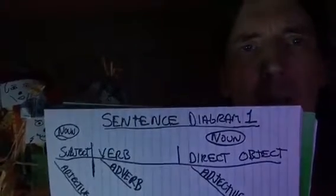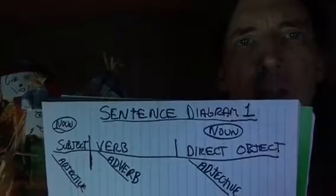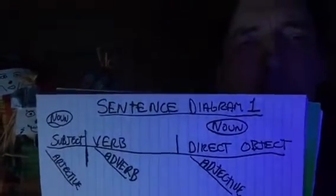Underneath the main line, if we have adjectives and adverbs, we put them on slanted lines underneath the words they modify. Adjectives modify nouns, so a subject and a direct object — which are nouns — can have adjectives on slanted lines beneath them. What modifies a verb is an adverb, so underneath the verb we have the adverb on a slanted line.